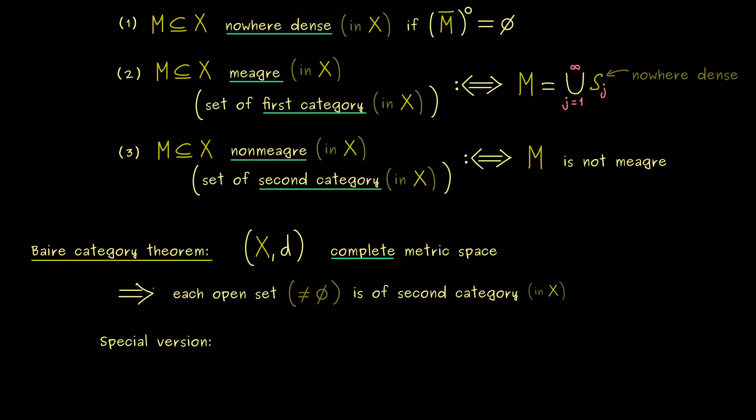However sometimes people only cite a very special version of this theorem. They simply say that a complete metric space implies that the metric space itself is of second category. So X itself is non-meager in X. Of course this is just a special version from the version before because X is an open set for sure. Nevertheless this is a version that is good enough and indeed used a lot in applications.